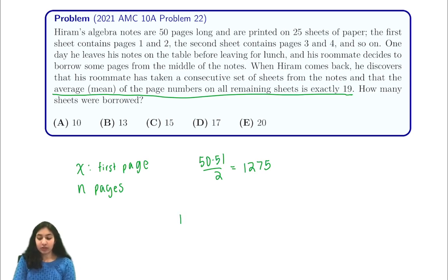And the sequence of sheets that the roommate takes is x, x plus 1, all the way up to x plus 2n minus 1. Again, remember that when he takes n pages, he's taking 2-sided sheets. So these are all the pages that the roommate takes.